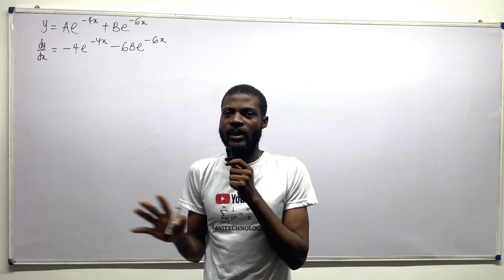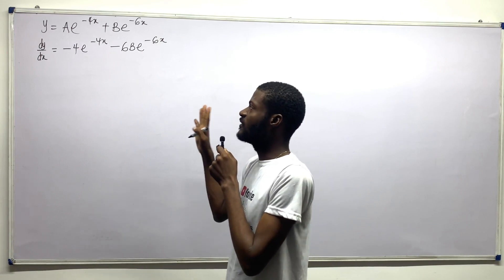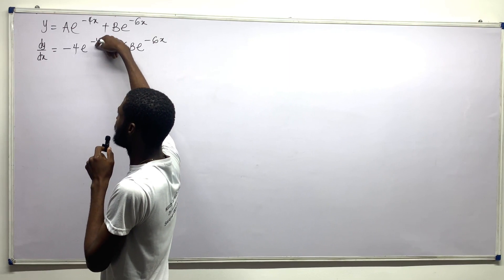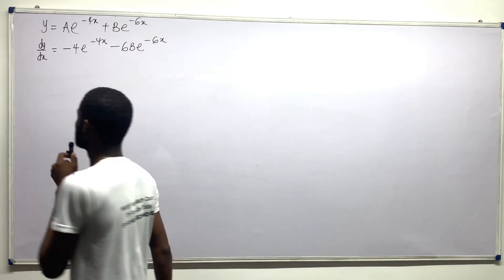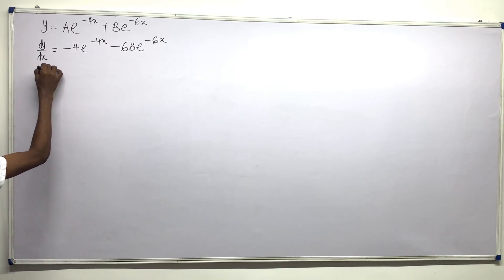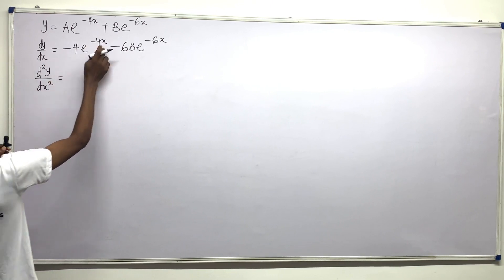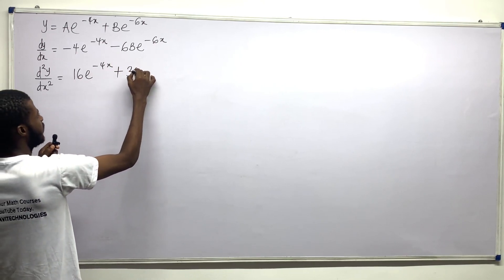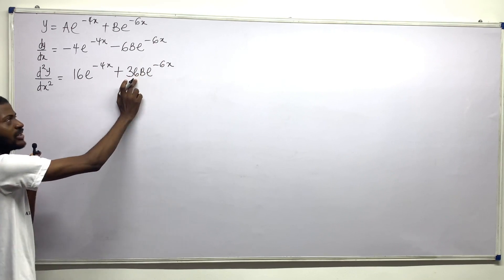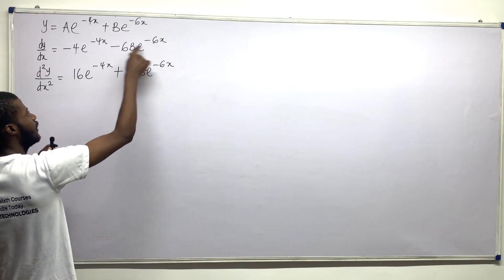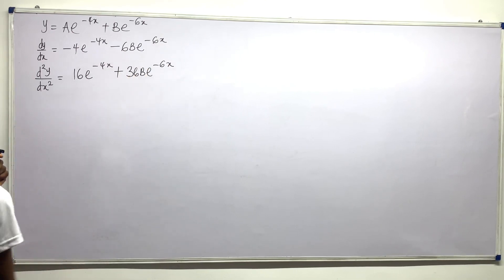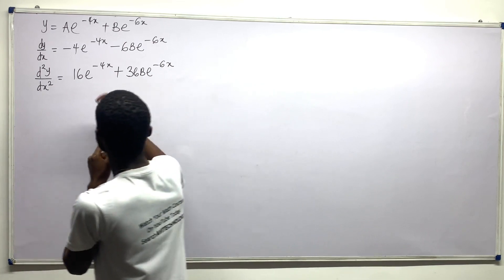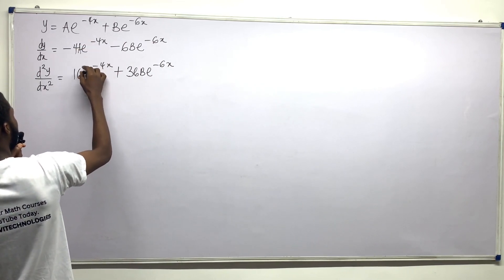We are working with a given format, and the goal is to eliminate our constants. Let us differentiate again. The second derivative d²y/dx² equals 16Ae to the negative 4x plus 36Be to the negative 6x. The 36 comes from differentiating minus 6 twice: minus 6 times minus 6 gives plus 36. Note: I had missed writing the A earlier — it should be there.